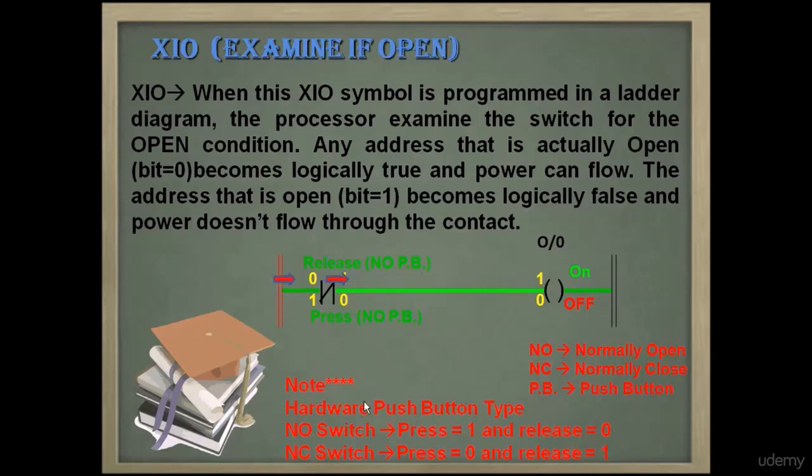There are two types of push buttons. First is NO type or normally open type. If this push button is pressed on hardware, then it sends bit 1, and in reverse condition, it sends bit 0. Second is NC type or normally closed type. If this push button is pressed on hardware, then it sends bit 0, and in reverse condition, it sends bit 1.